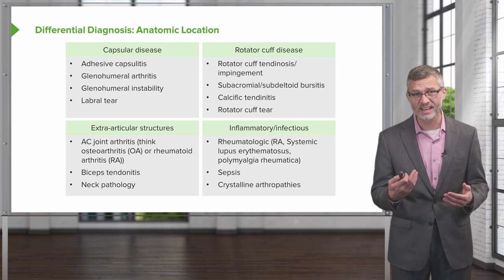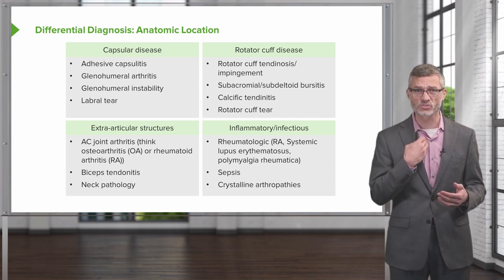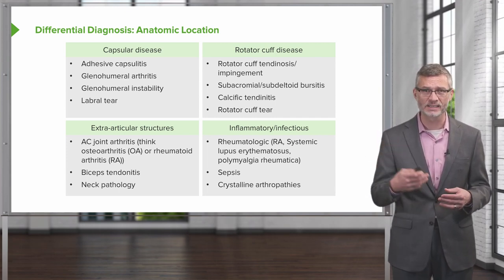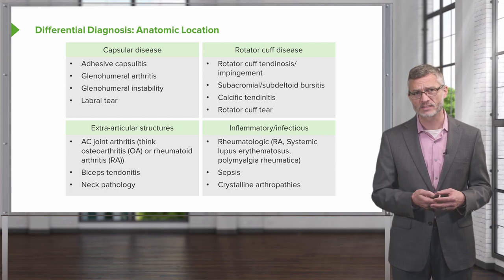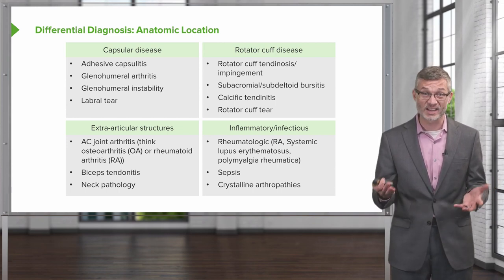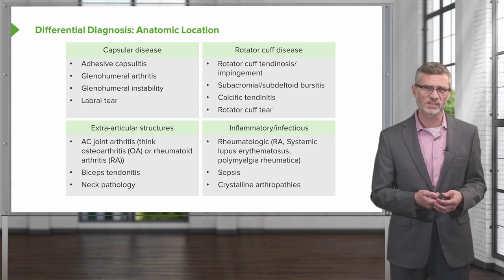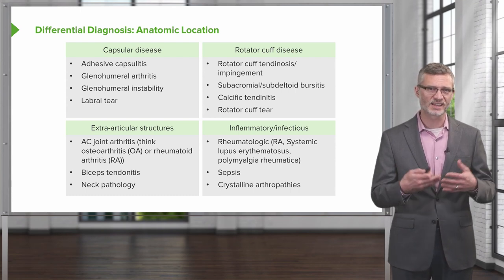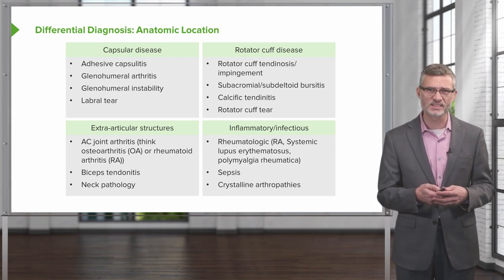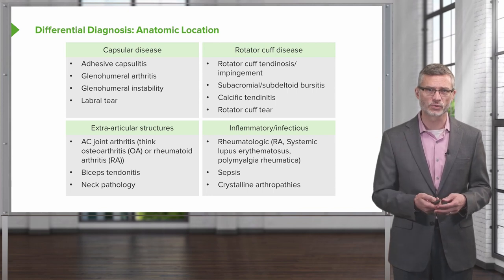Lastly, there are inflammatory and infectious causes of shoulder pain. Rheumatoid arthritis can affect the AC and sternoclavicular joints, and less commonly the glenohumeral joint. Septic arthritis is also a possibility, and crystalline arthropathies like gout or CPPD disease can also afflict the shoulder.